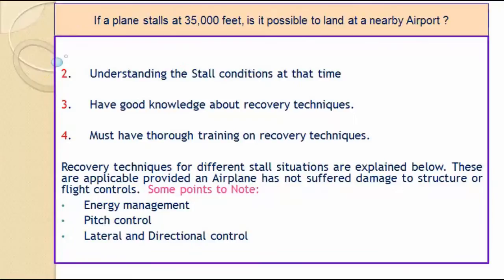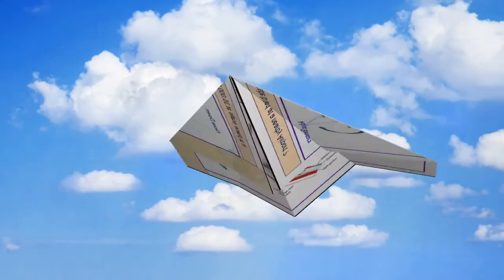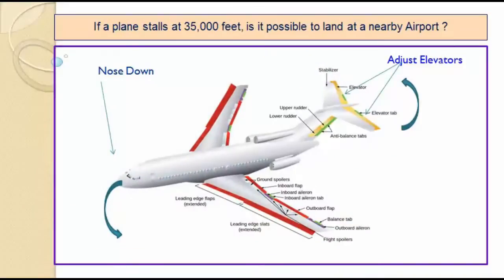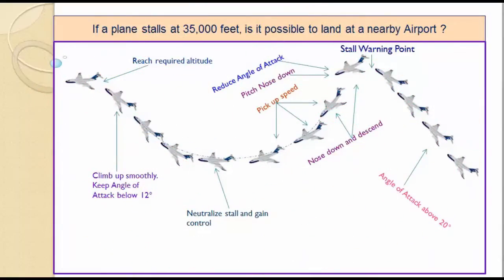Energy management is about understanding the three types of energies available to generate aerodynamic forces. Aircraft will climb and gain altitude at the cost of crucial airspeed and lift. There are a total of ten steps in the stall recovery procedure.